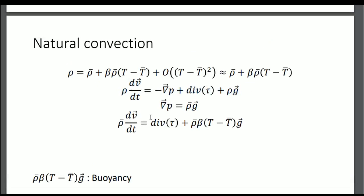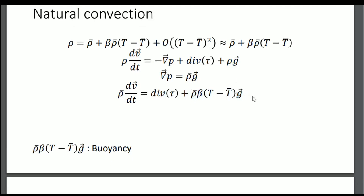Substituting: rho becomes rho-bar (part of the Boussinesq approach), the Laplacian terms stay, two terms merge, and the Boussinesq hypothesis transforms the remaining term into buoyancy — in French, 'poussée d'Archimède.' Buoyancy arises from density differences between fluids (e.g., air and water). With our density expression, it depends directly on temperature, giving an equation linking velocity with temperature — ideal for conduction-convection systems.